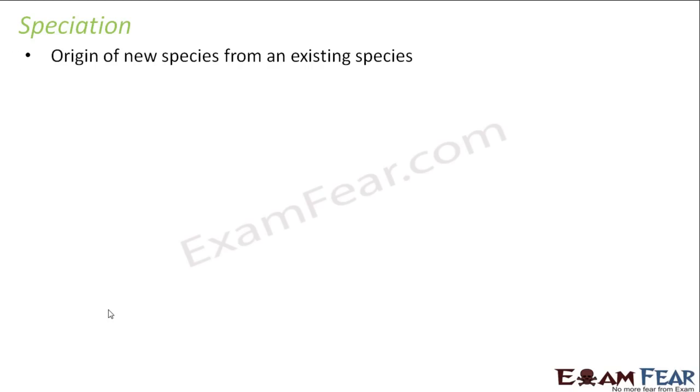So let us now talk about speciation. The process of evolution gives rise to new species. While I was talking about Darwin's finches, there are so many varieties of finches which were found to be of different species because they were not able to reproduce with each other. So today there are almost 15 species of finches which exist there. Speciation is the origin of new species from an existing species — that is why it is named after species.